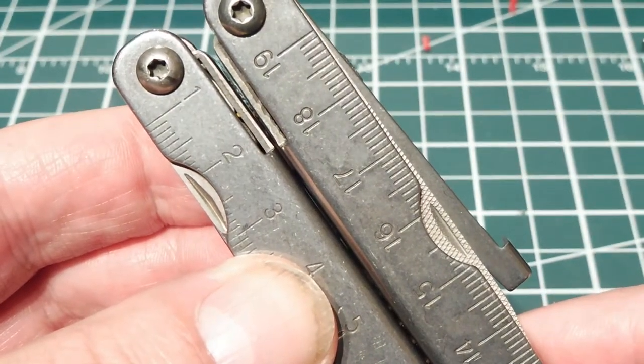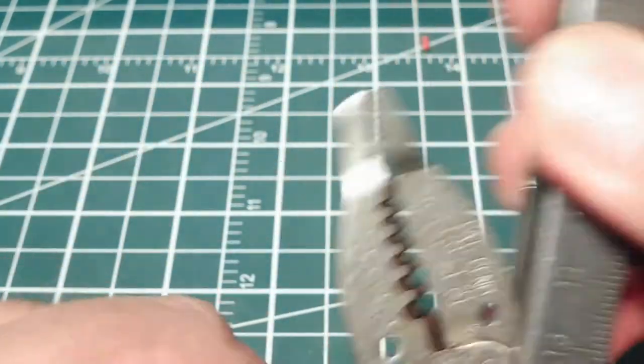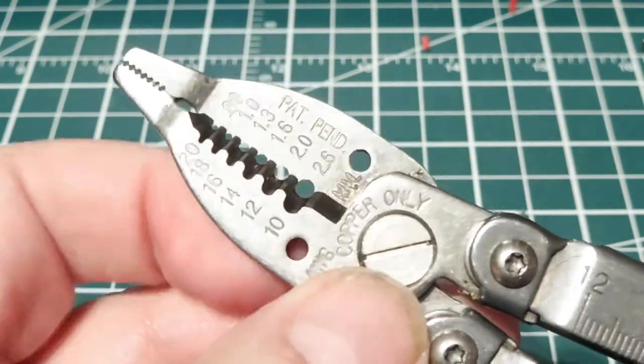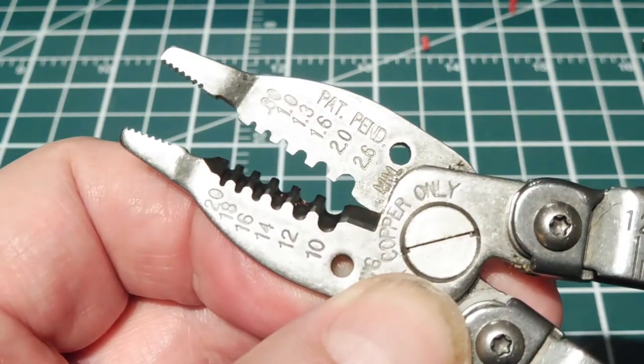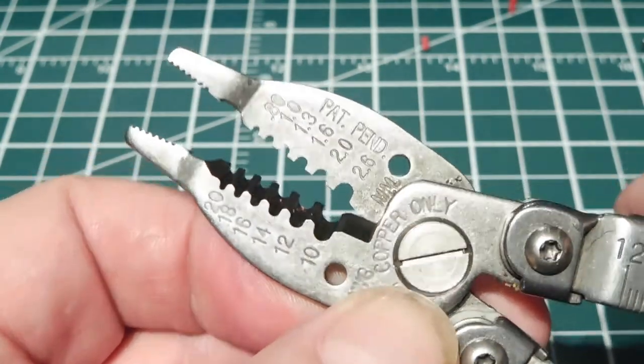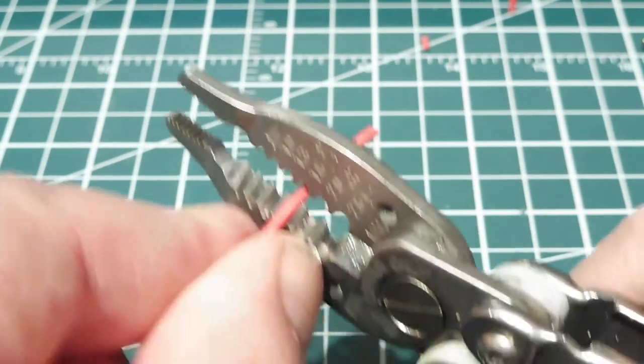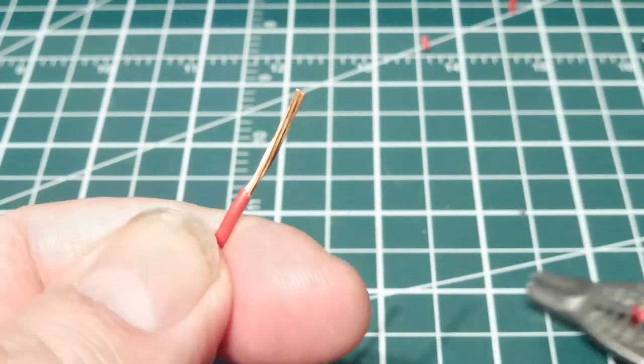Another pocket tool is your Leatherman type tool. Some of them have an option of a wire stripper built in, like this one here. You can see it has two half circle cutting blades. You just pick the appropriate gauge for your wire and you insert it in and crimp and pull, and your wire is stripped.